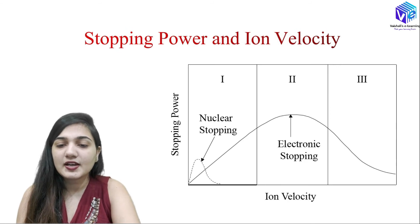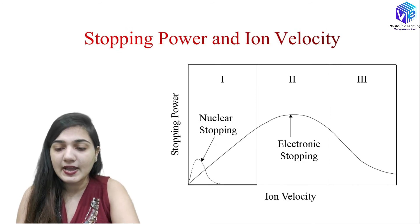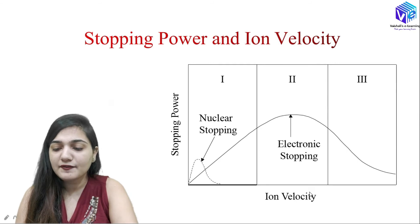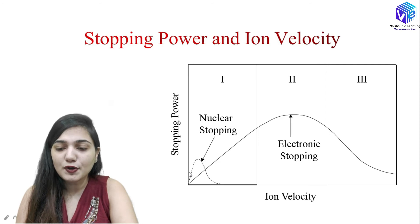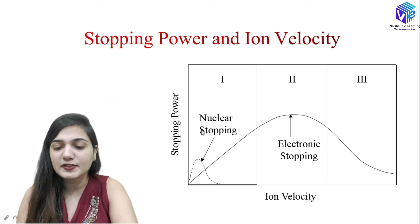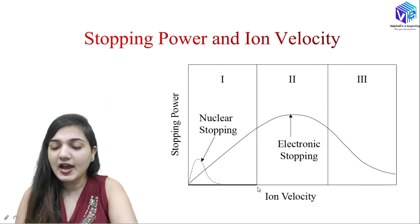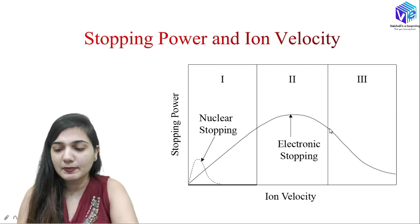Looking at the stopping power versus ion velocity: if we have lower ion velocity, the stopping power is higher due to nuclear stopping — nuclear stopping is predominant at lower ion velocity. If we have higher ion velocity, then electronic stopping becomes predominant.